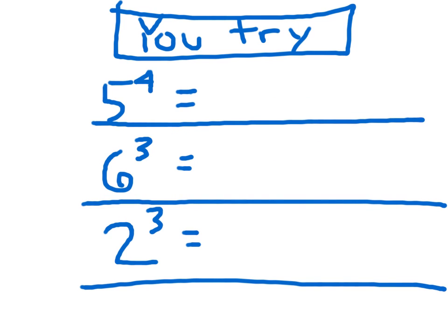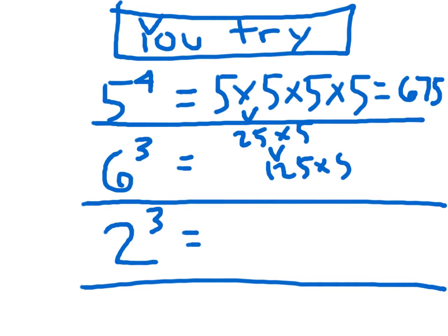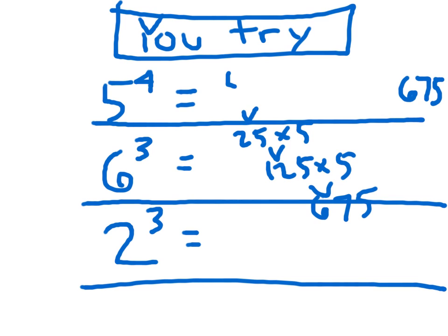And here we go — take away that pause. For that first one, 5 to the 4th: that's 5 times 5 times 5 times 5, which you evaluated to 625. What I would have done is taken 5 times 5 to make 25, times 5 again to make 125, times 5 again to make 625.